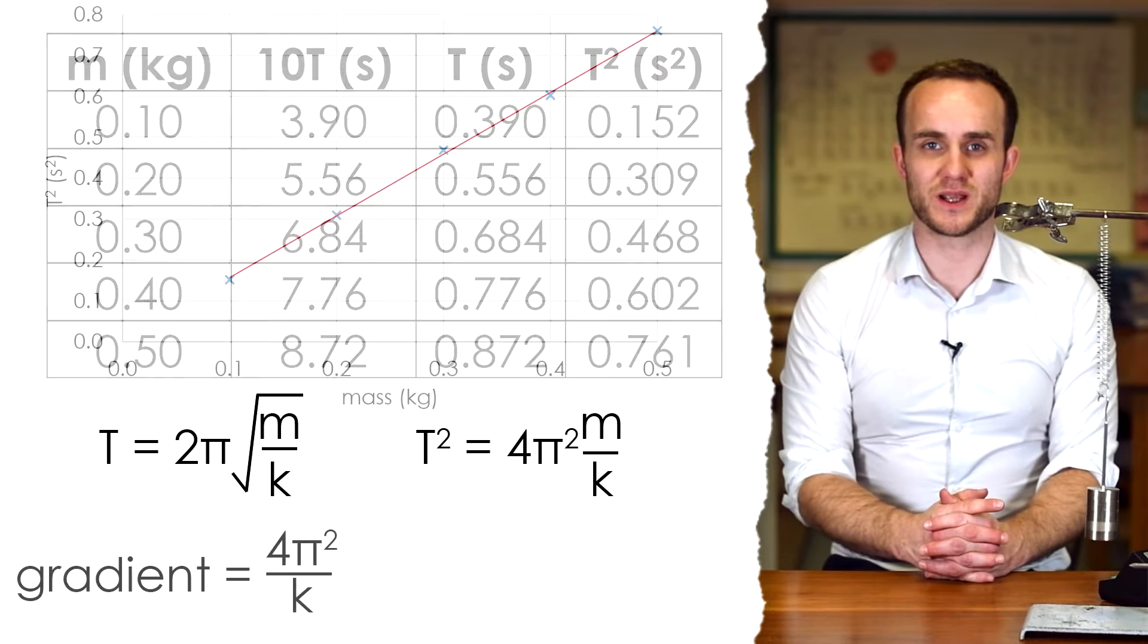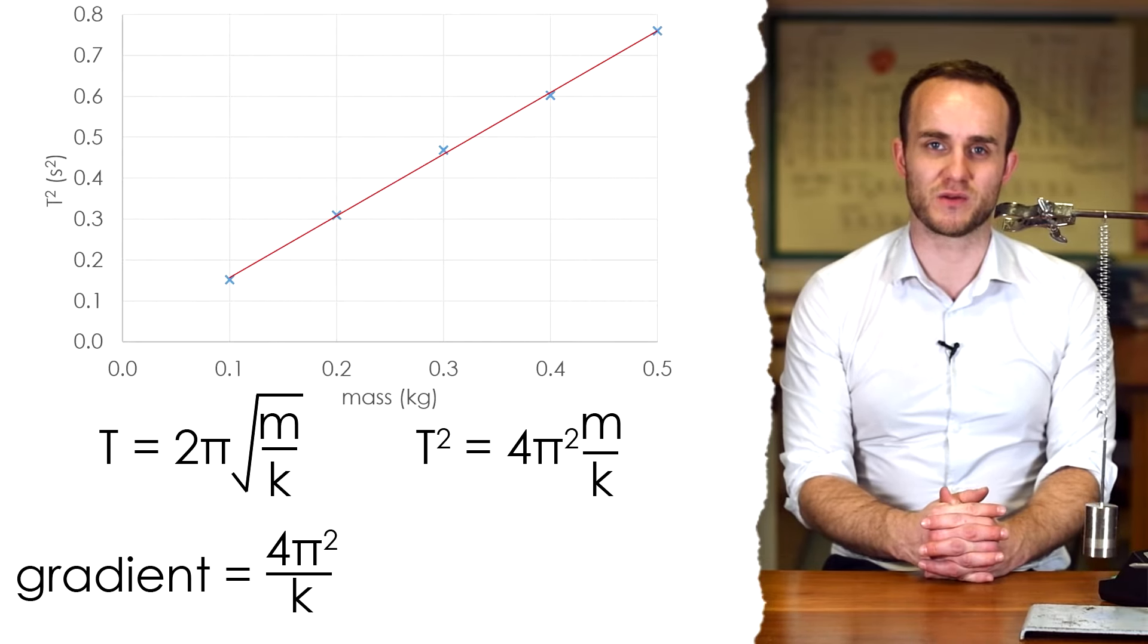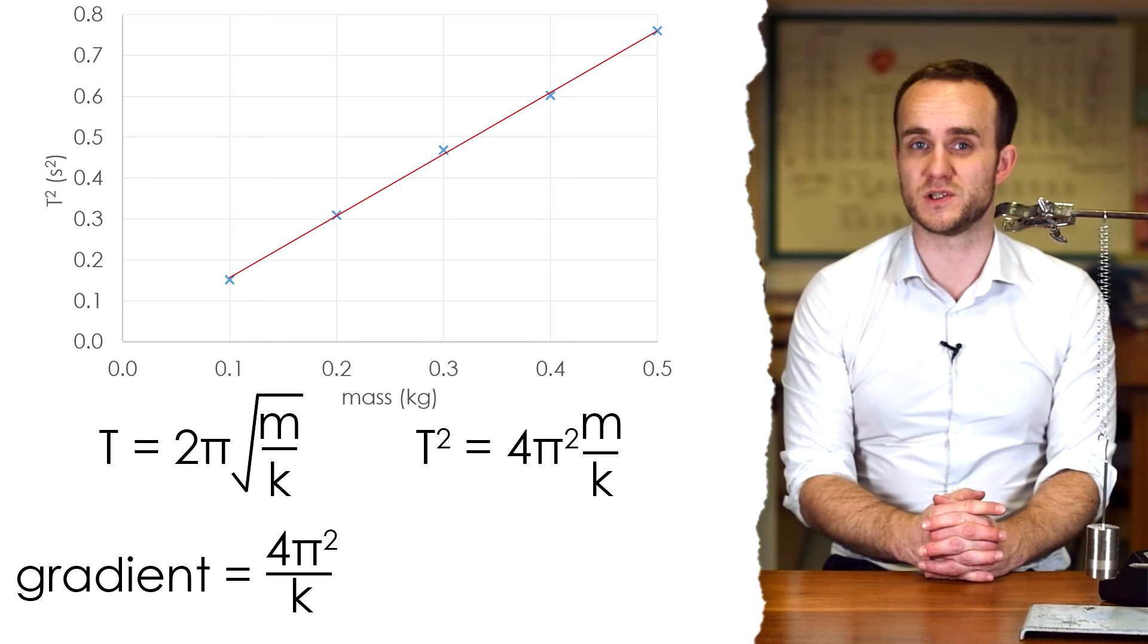So if I do a graph of t squared against m, I should end up with a straight line graph that goes to the origin, because t squared should be proportional to m.